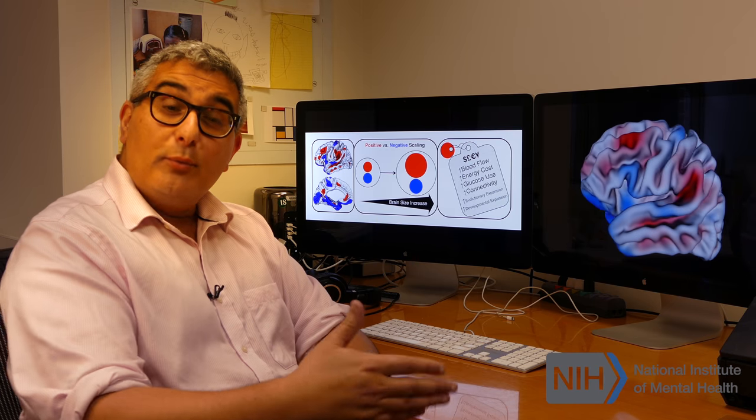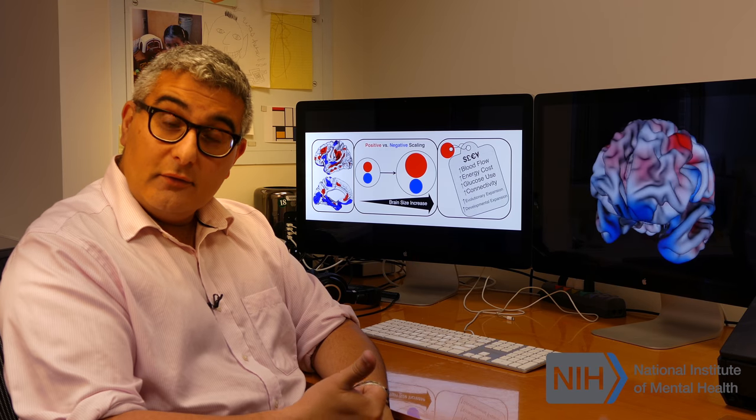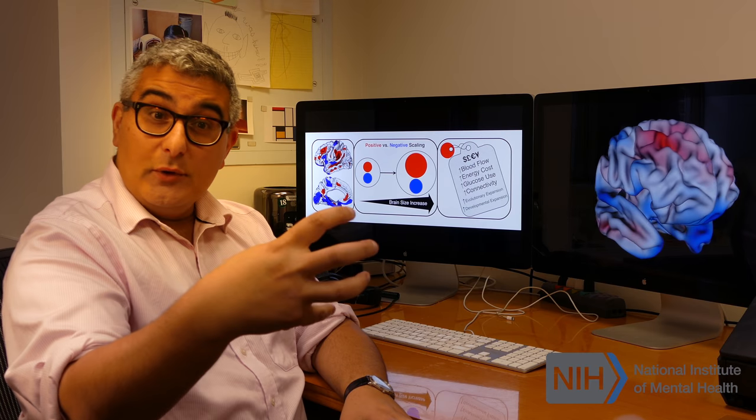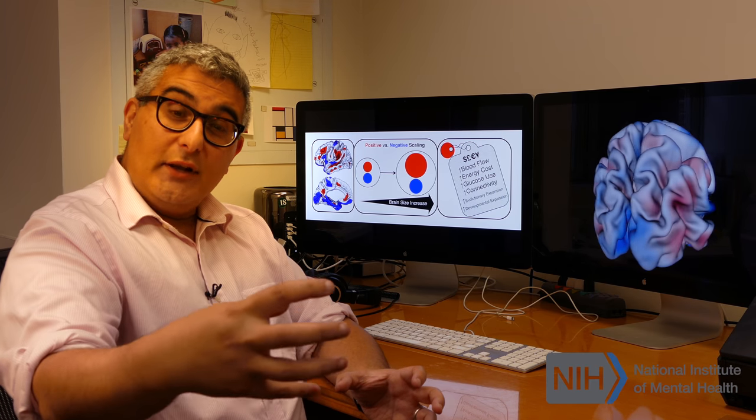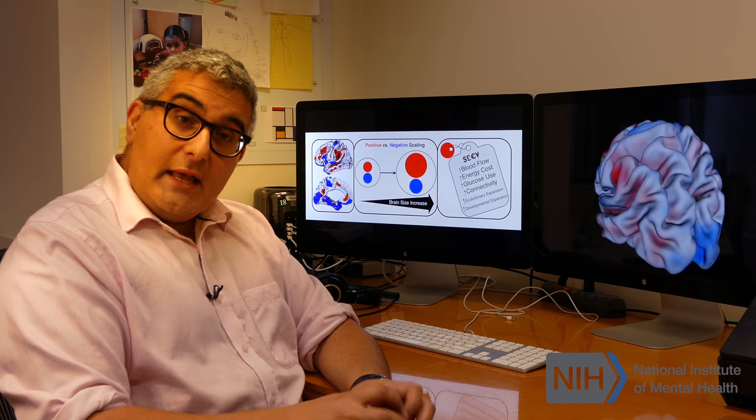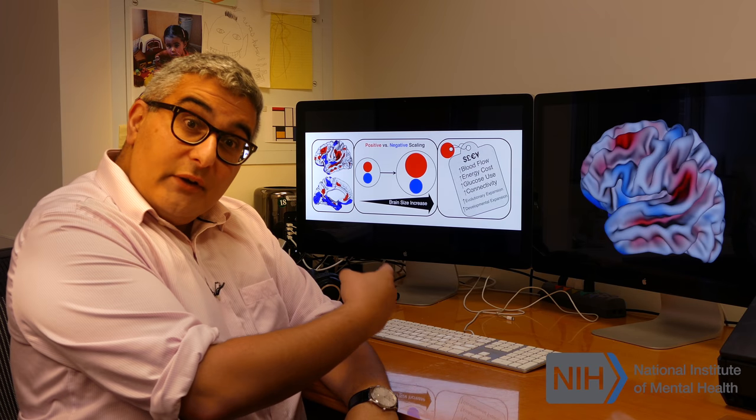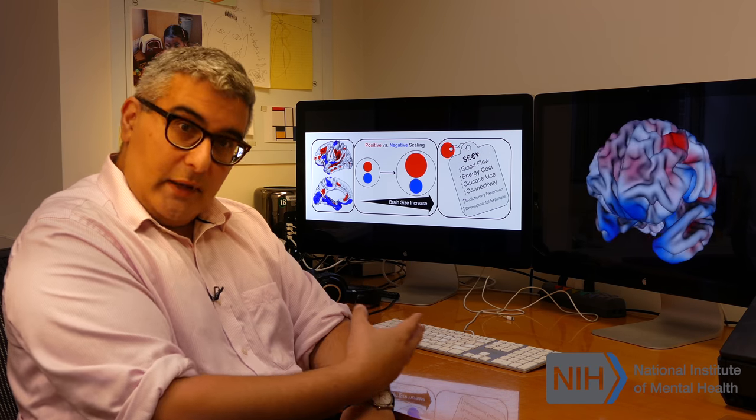But the two other routes to a big primate brain are evolving one, the difference between humans and some non-human primates, or growing one, the difference between an adult brain size and the size of a child. And this map that we found very strongly aligned with both of those maps.